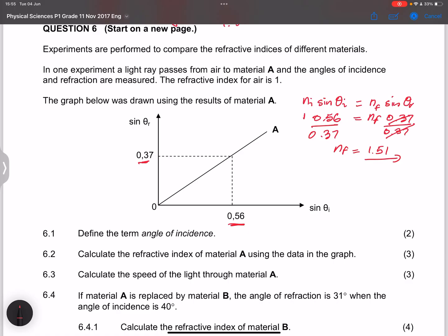Now, they said to us, calculate the speed of light through the material A. And please remember, ladies and gents, we've got these formulae. So N is equal to C over V, where N is the refractive index. So we know this is going to be 1.51. C is the speed of light. So that's 3 times 10 to the power 8.